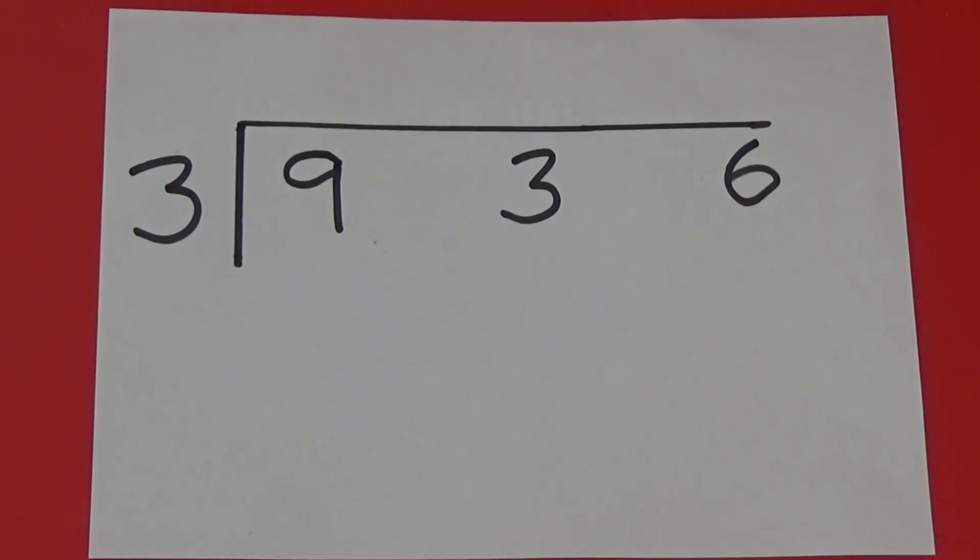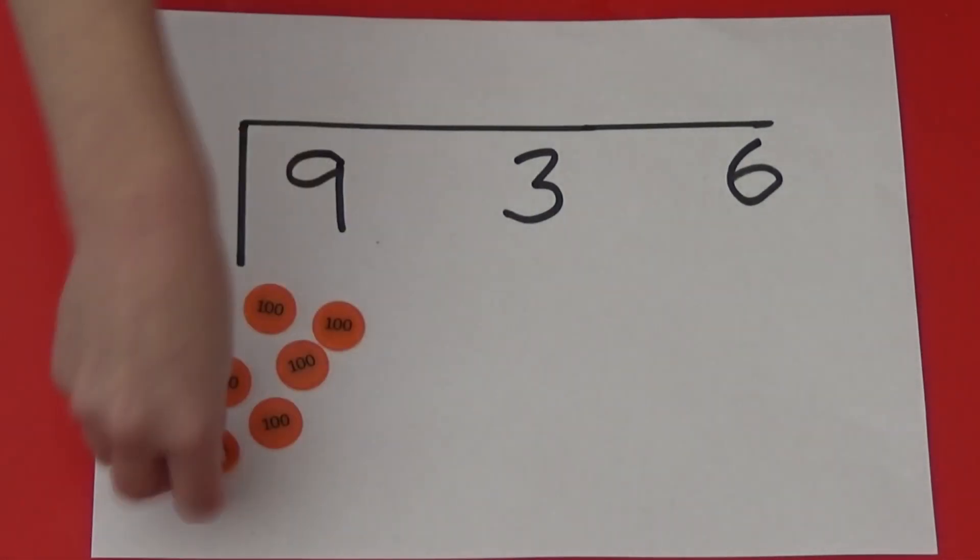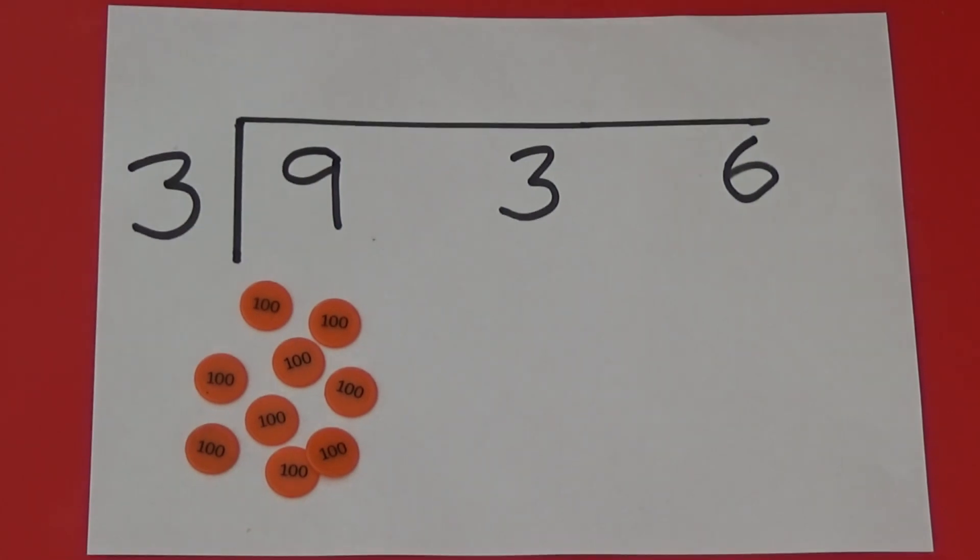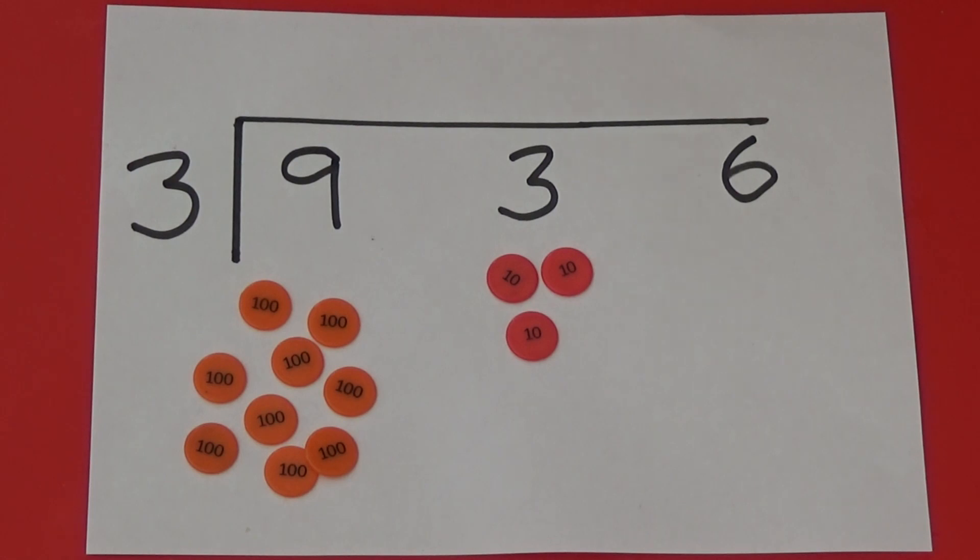For the 900 we need nine 100 counters. For the 30 we need three 10s. And for the 6 we need six 1s.